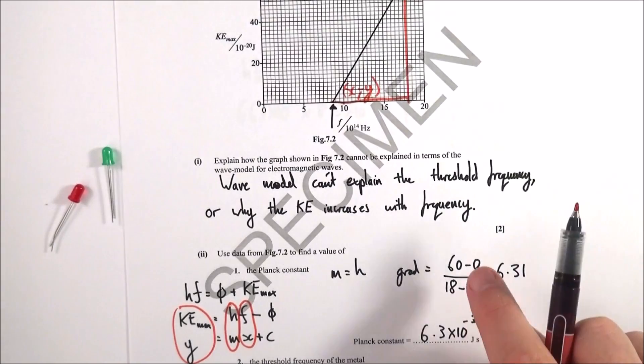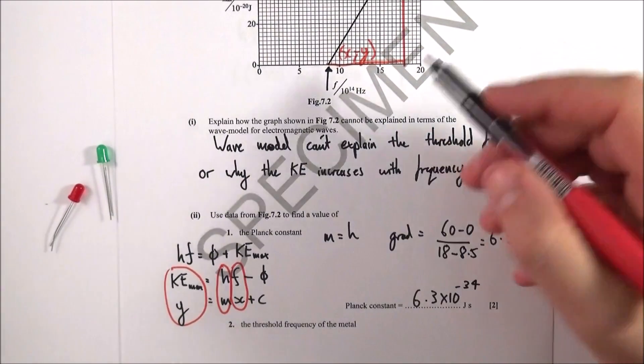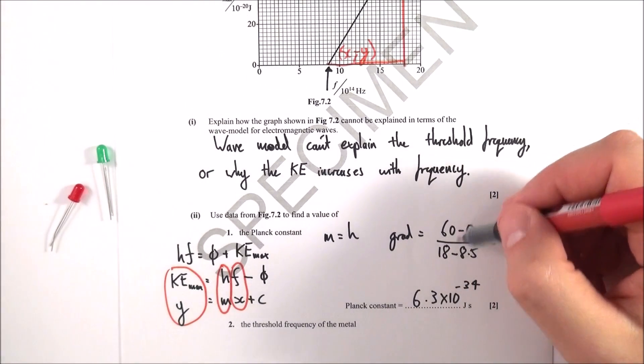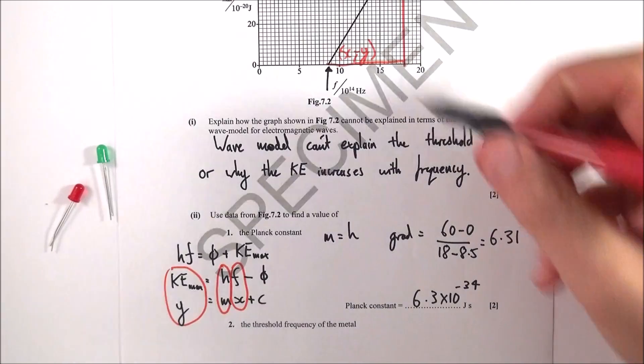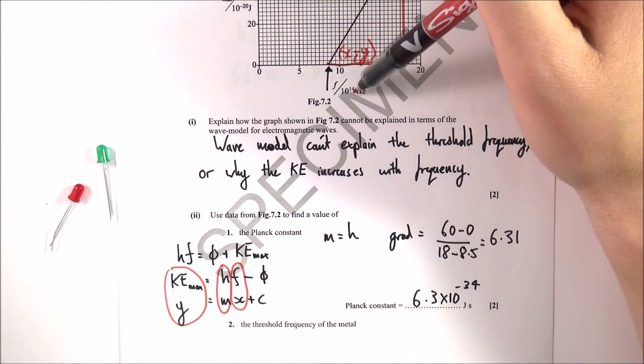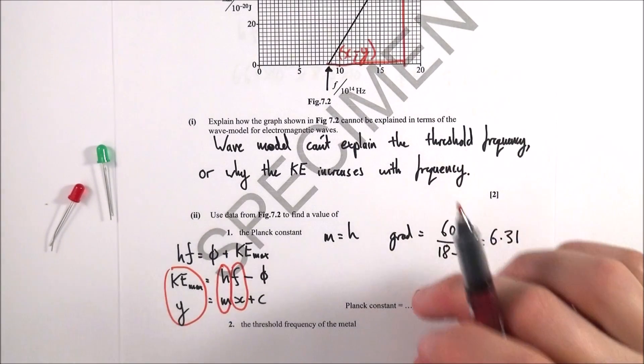I'm going to draw a big triangle. I'm going to look at my x and y coordinates at different points. You can use these coordinates to work out your gradient. Show the working out - this makes it easy for the examiner to know you're doing the right thing. The gradient equals the change in y over the change in x, which equals 6.31. Because that's 10 to the minus 20 and that's 10 to the 14, this gives a Planck constant of 6.3 times 10 to the minus 34.